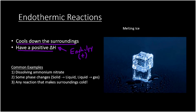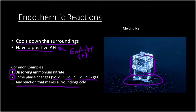Examples of endothermic reactions include dissolving ammonium nitrate, which we just looked at. Some phase changes are also endothermic — for example, melting goes from solid to liquid and takes energy. Here you can see ice cubes starting to melt; breaking the hydrogen bonds holding water together requires energy. Similarly, going from liquid to gas — boiling — also takes energy and is endothermic. Any time a reaction makes the surroundings cold, that's a sign it's endothermic.